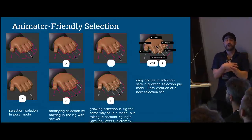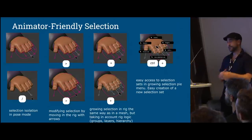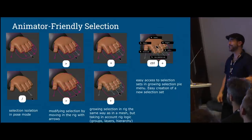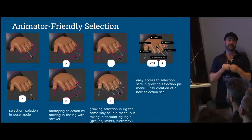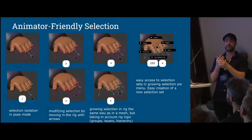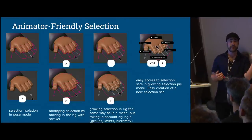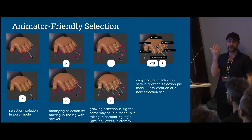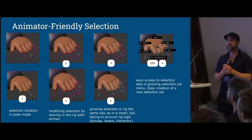Once you have something selected, there are related things you might want to pick. Imagine you pick the tip of a finger — you should be able to grow your selection just like with geometry, picking the rest of the finger controls, going up to the entire hand, or quickly selecting all fingers, the fingers on the other hand, all IK controls on the arm, or FK and IK controls. Being able to quickly select related controls is another thing we want to do.